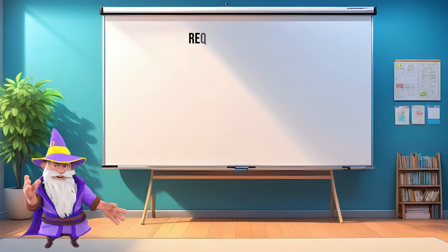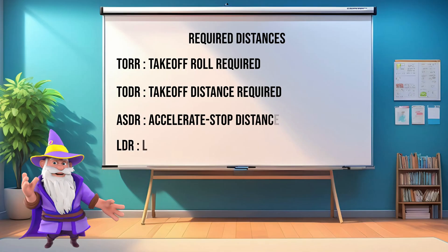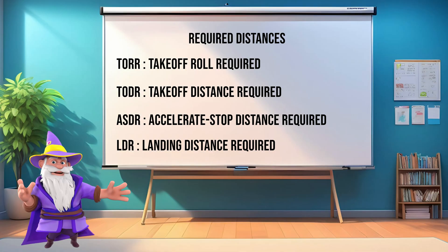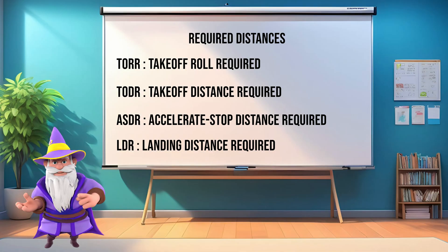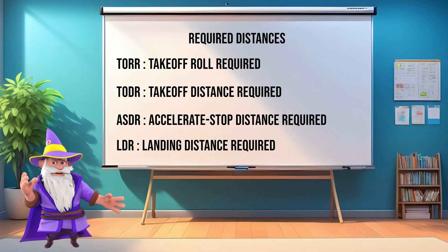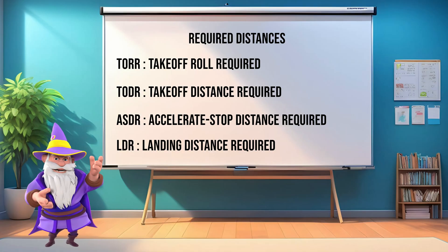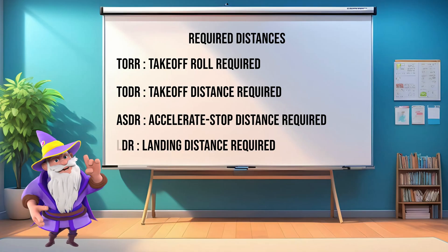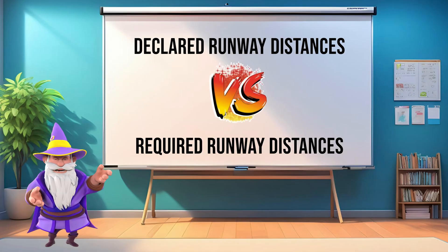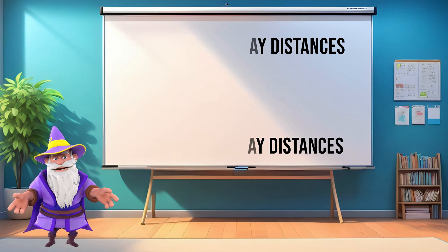In the second part of this lesson, we are going to talk about required distances — what a pilot really needs to know to operate safely. Those are the calculated distances needed to determine whether we can take off, land, or even reject a takeoff. Airlines and pilots don't just look at available distances; they must compare them with the aircraft's required distances based on weight, weather, and performance factors.